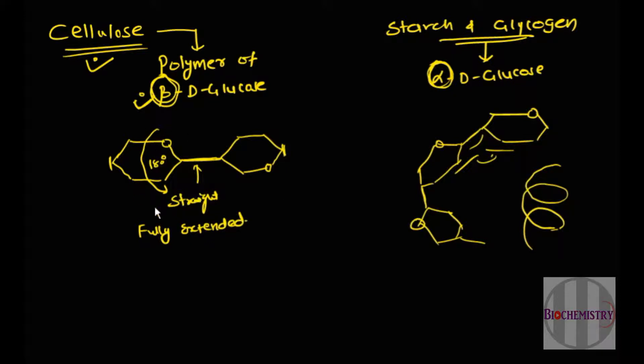This is the primary difference between starch and glycogen versus cellulose. Now let's see what is the effect of this fully extended structure on the overall properties of cellulose.